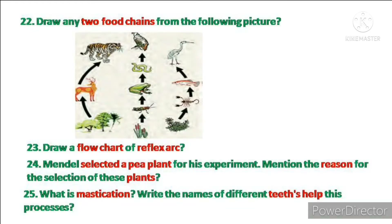Moving to Section 3: short answer type questions are given here. In this section also, 8 questions will be there. You should answer all the questions — there is no choice here. Each question carries 2 marks, and the total marks allotted for this section is 16. For these questions, you should write answers in 2 to 3 sentences.